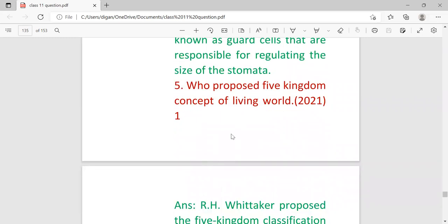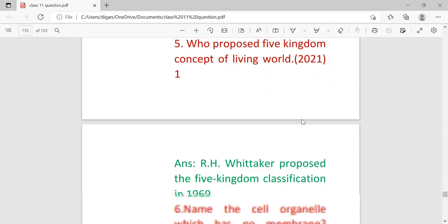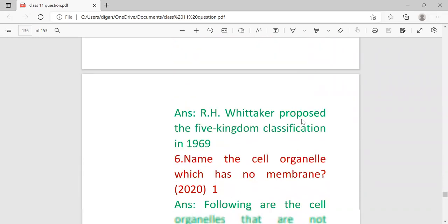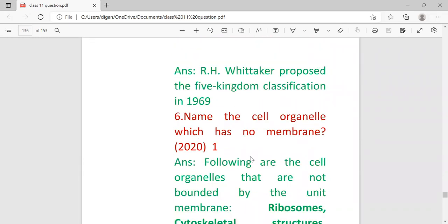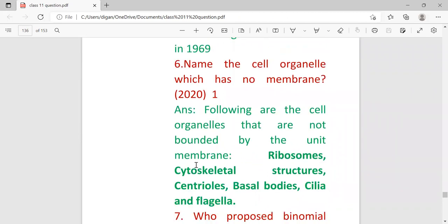The pore is bordered by a pair of specialized parenchyma cells known as guard cells that are responsible for regulating the size of the stomata. Next, who proposed the five kingdom concept in living world? Came in 2021. Then name the cell organelles which have no cell membrane. Ribosome, centrioles, etc. If the question asks for only one organelle, you can write ribosome.